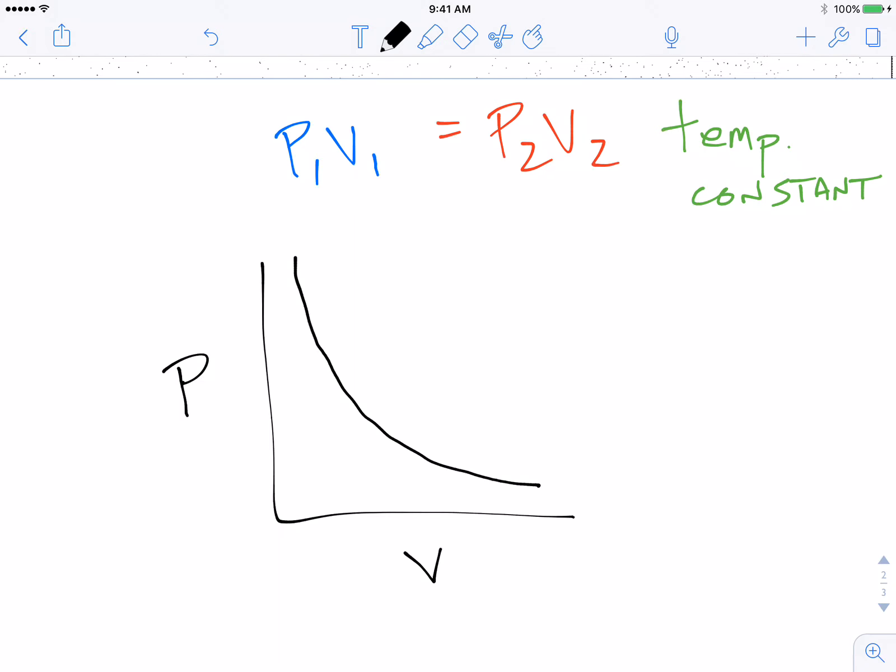We talked about how pressure and volume have this inverse relationship. So as the volume goes down, the pressure will go up because the gas doesn't have as much space, you have more particle collisions. You have an indirect relationship there. The same could be said if the volume went up, and the gas had more space to move, you'd have less particle collisions and less pressure.